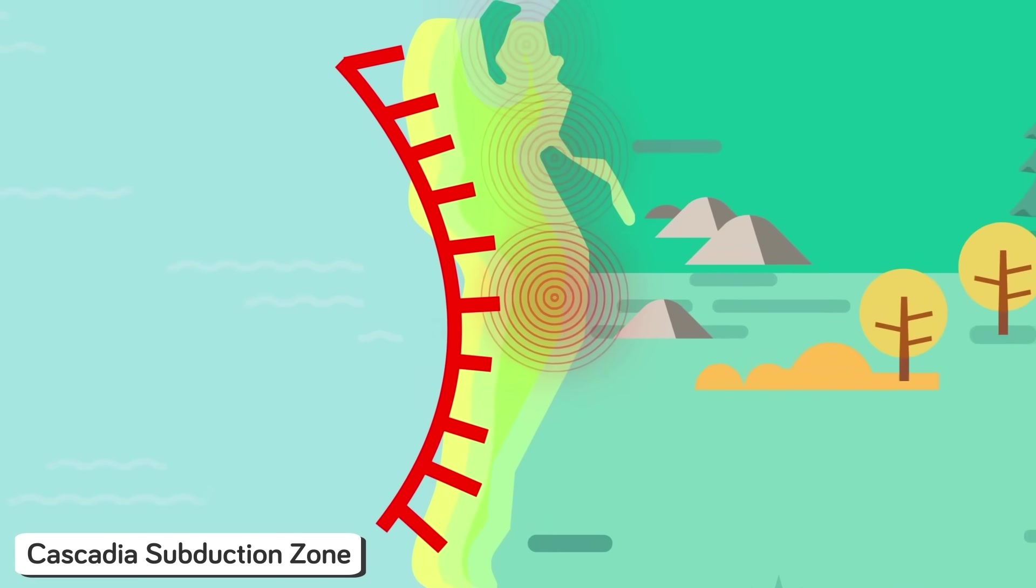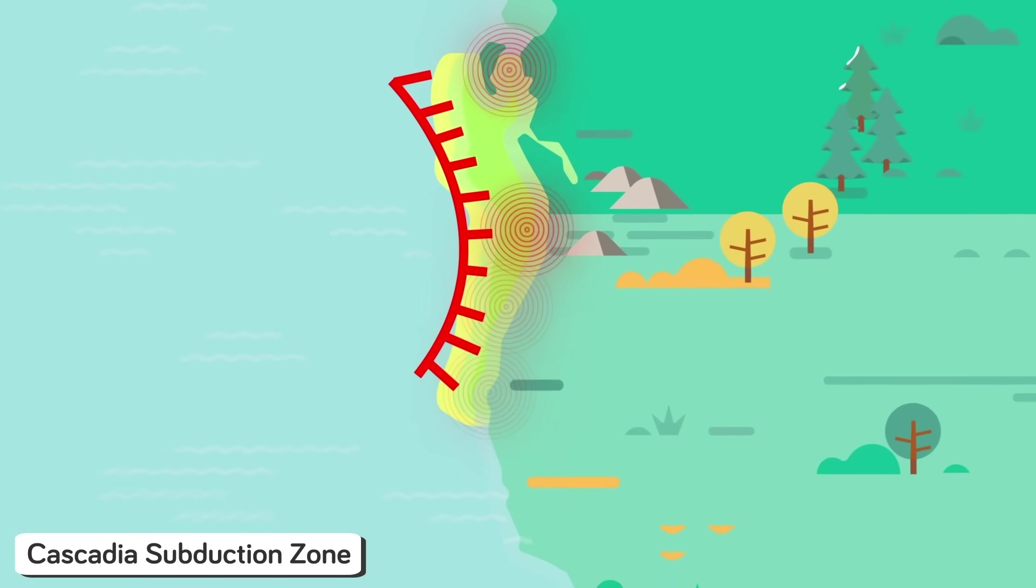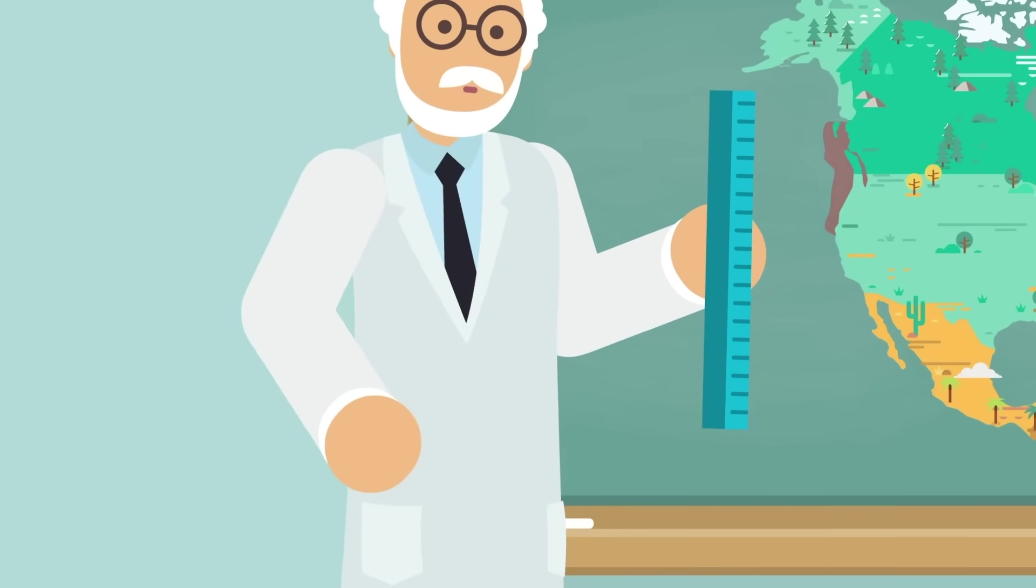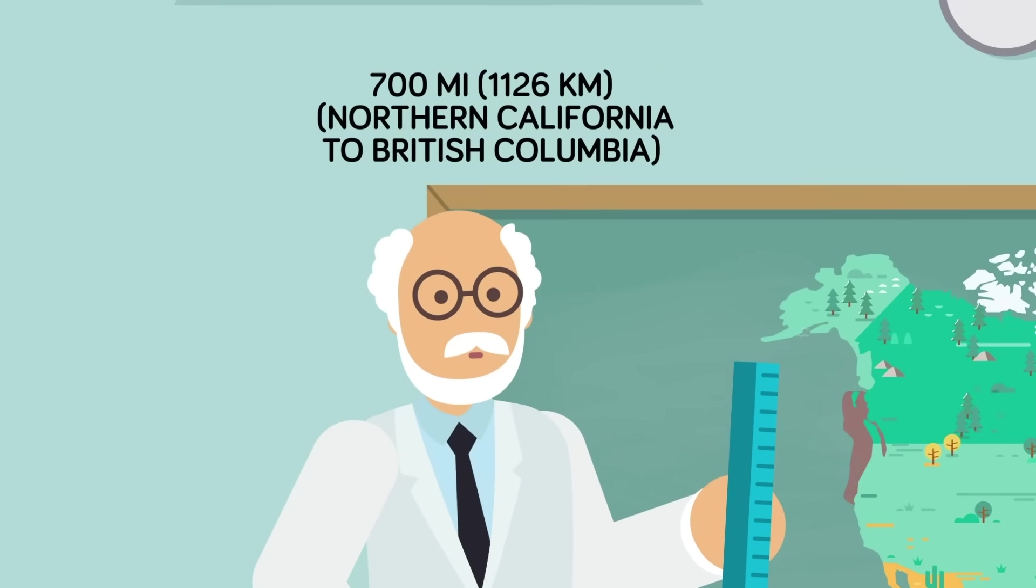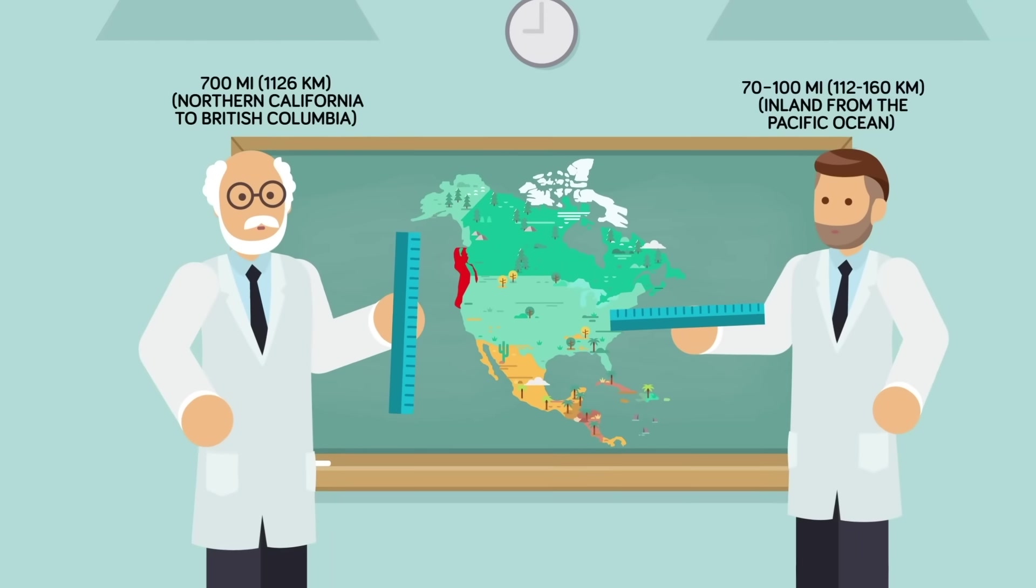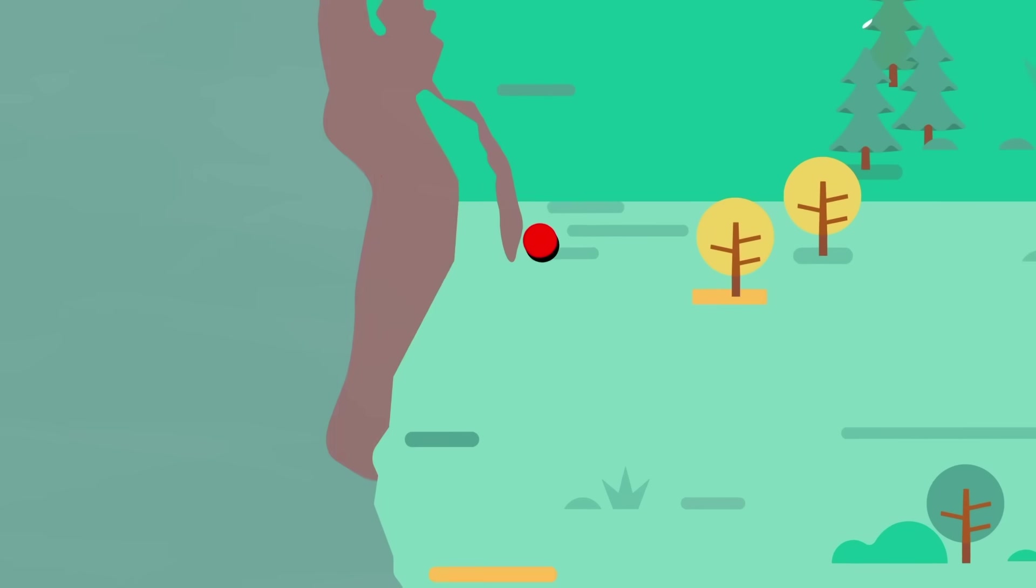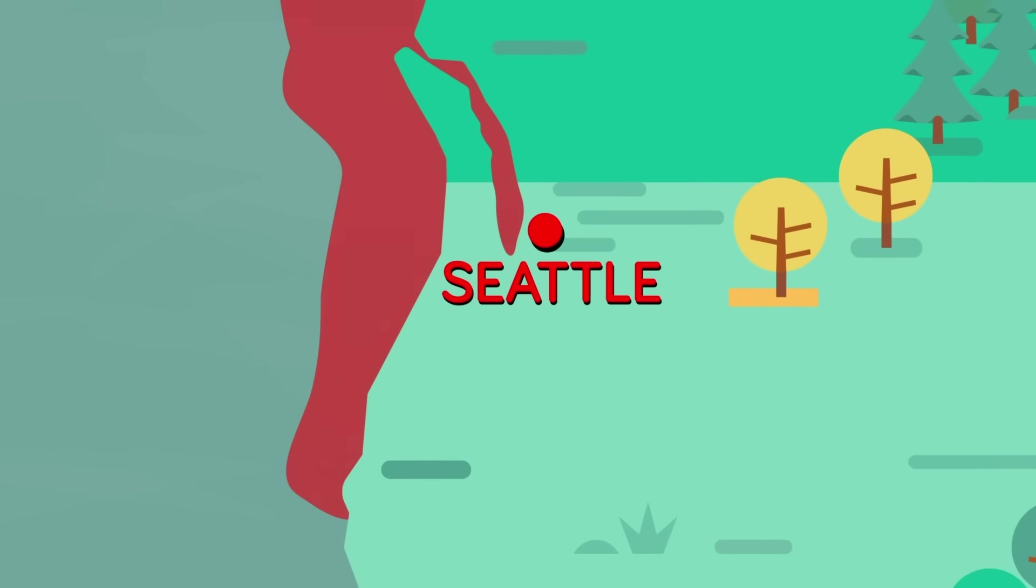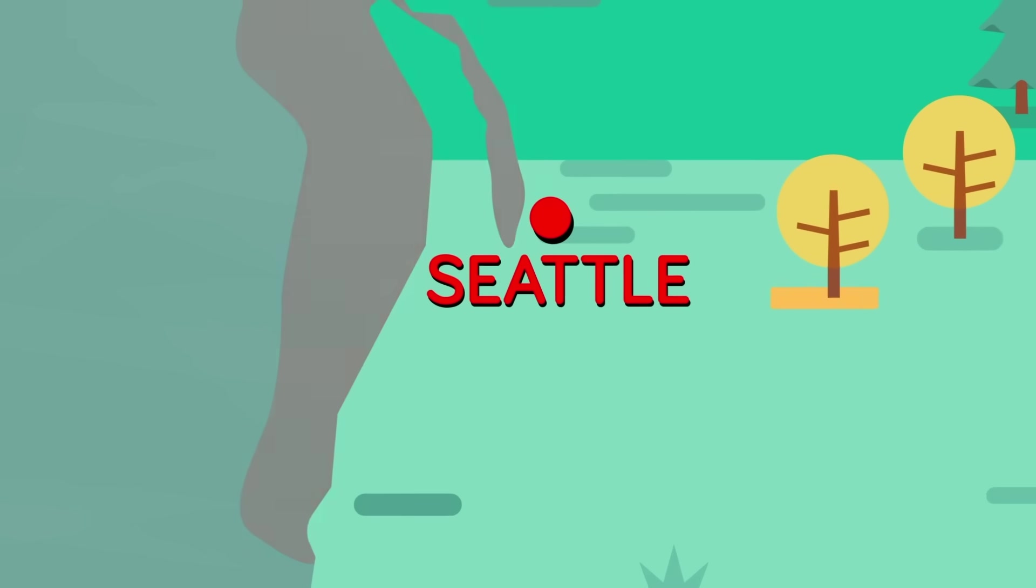And if that earthquake hits, it will be more terrifying than you can imagine. The Cascadia Subduction Zone runs 700 miles from Northern California to British Columbia, around 70 to 100 miles inland from the Pacific Ocean. In addition, places like Seattle would be right in the middle of it all, a sort of ground zero for an earthquake in the area. And how would you know it's coming?